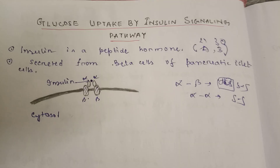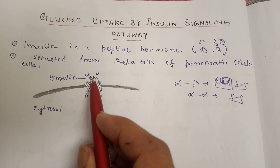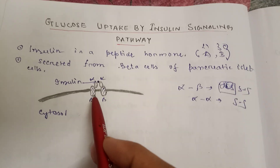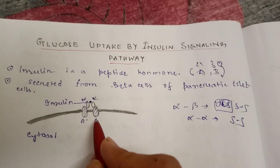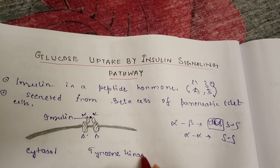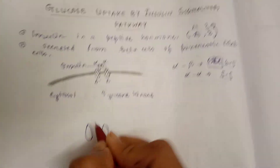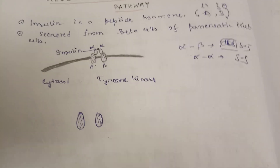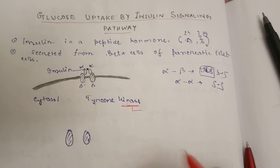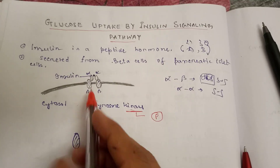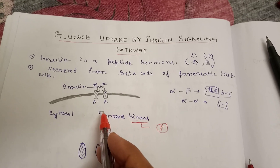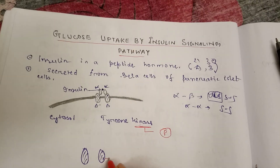When insulin binds to the alpha subunit, it releases a signal for the beta subunit to activate its tyrosine kinase. Kinase means it will phosphorylate something. So when insulin binds to the alpha receptor, the tyrosine kinase part of the beta subunit is activated, and it will phosphorylate the beta subunits themselves.